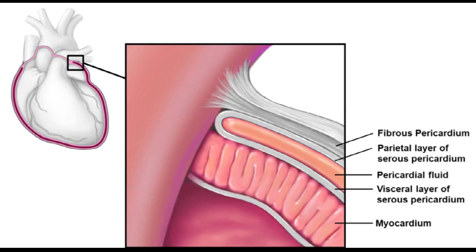The heart is protected by the pericardium, which contains two layers. The outer layer is called the fibrous pericardium, while the inner layer is called the serous pericardium. The fibrous pericardium has many fibers, and the serous pericardium is the layer that covers the heart.